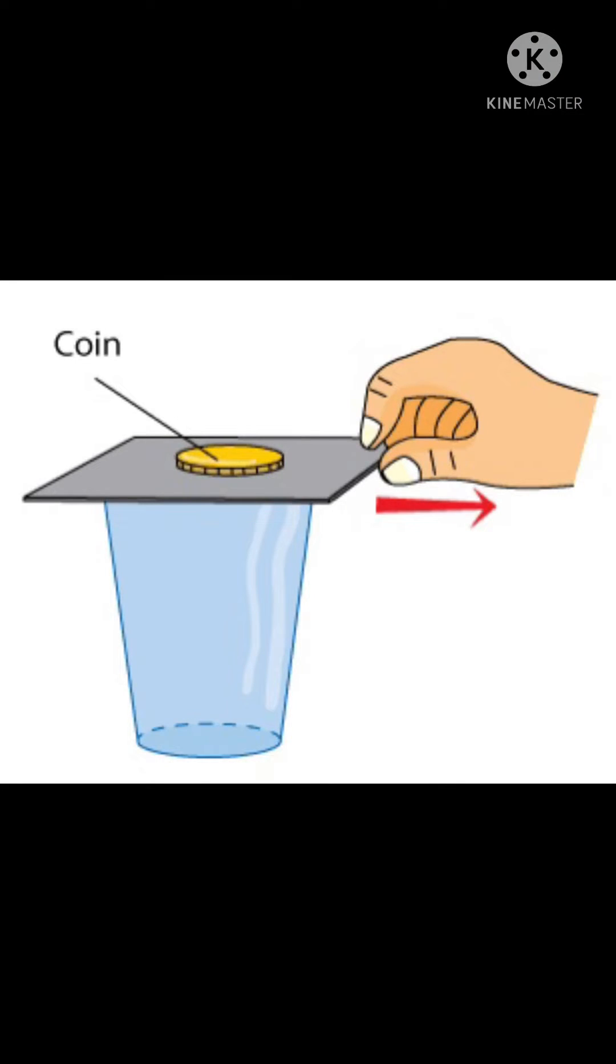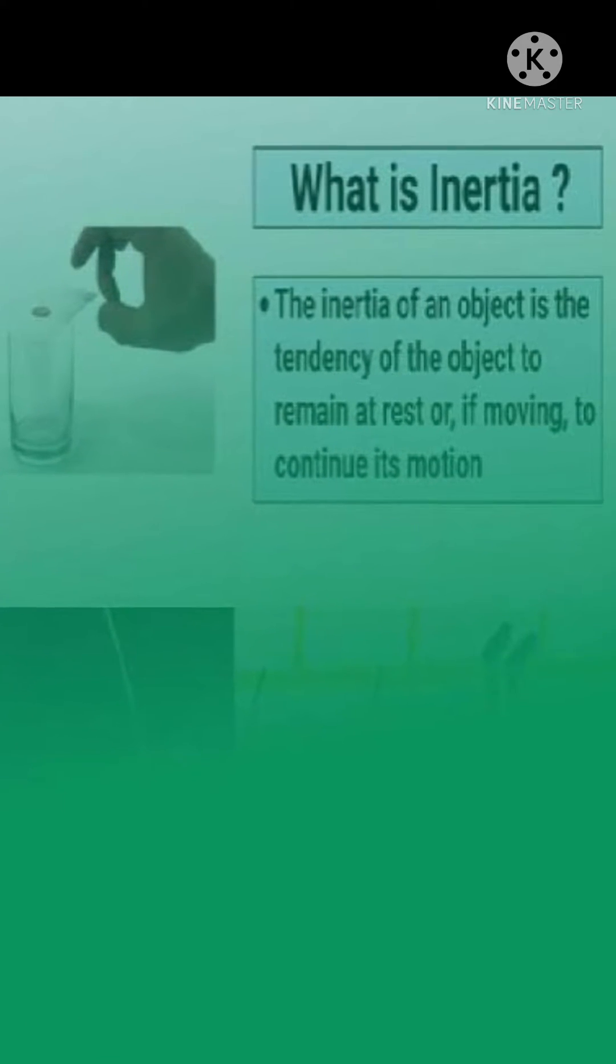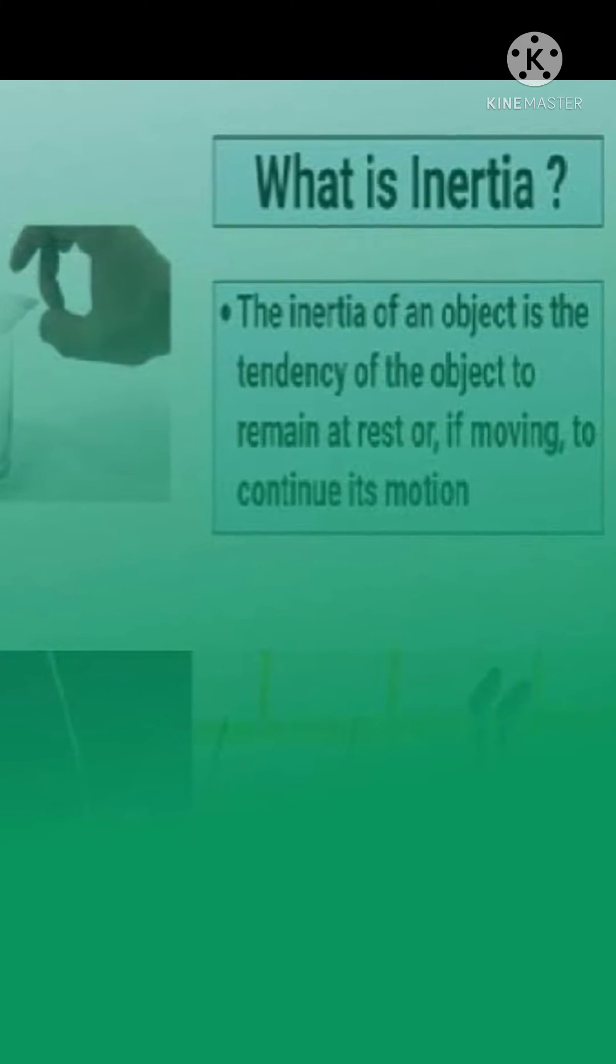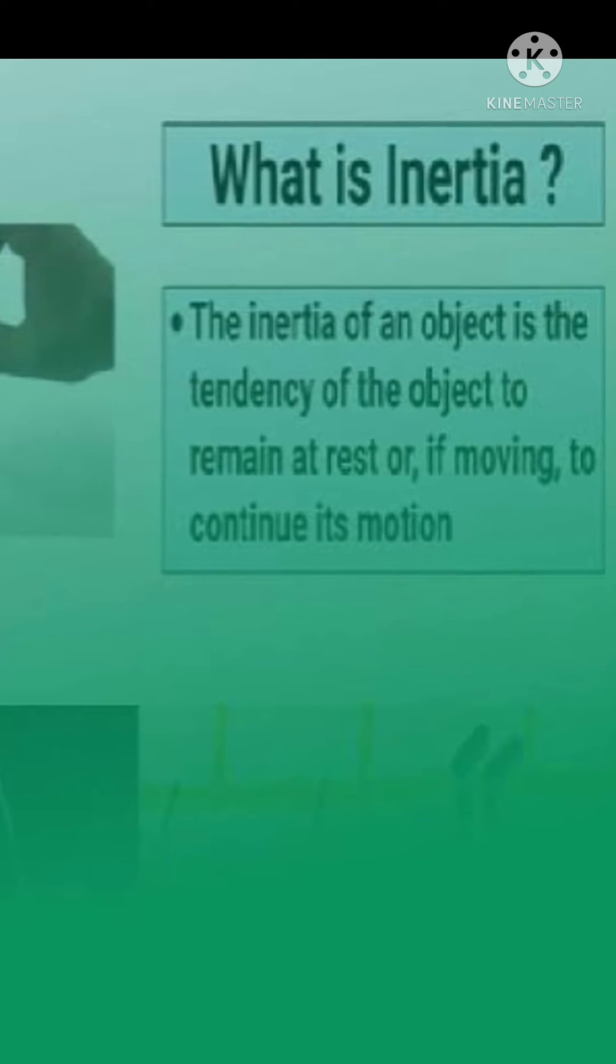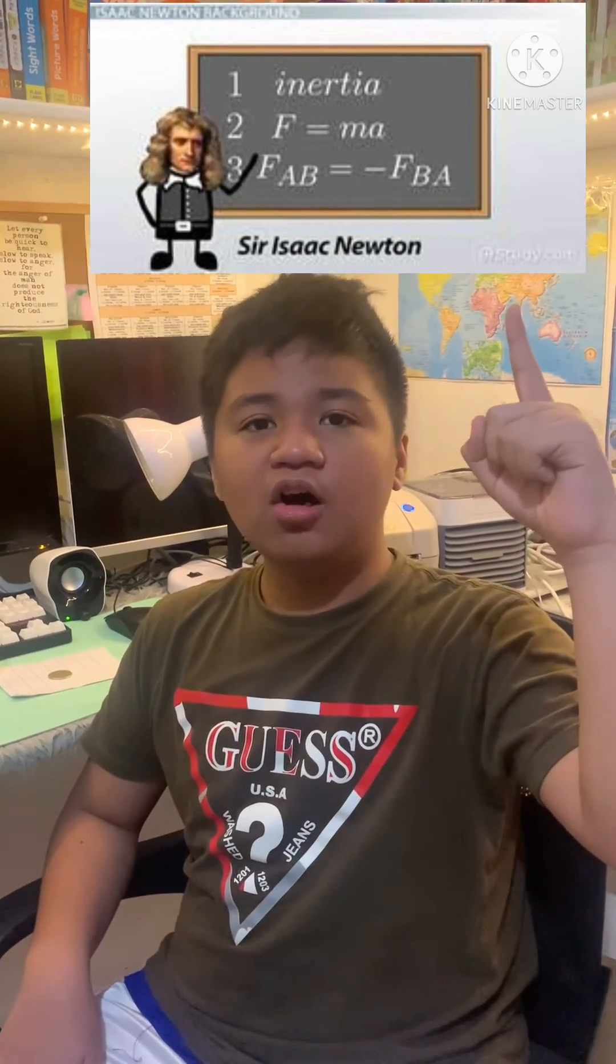The inertia of an object is the tendency of the object to remain at rest or, if moving, to continue its motion. And that is the law of inertia by Isaac Newton.